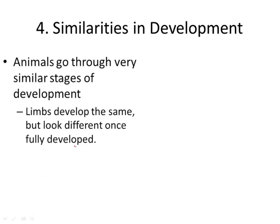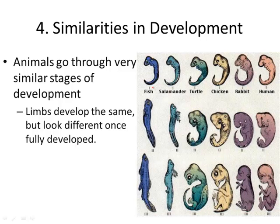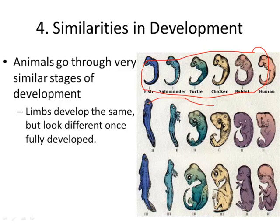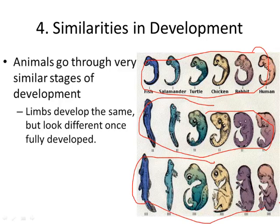We can also look at similarities in development. Looking at embryos of a fish, salamander, turtle, chicken, rabbit, and human, we can see they all look fairly similar early on. As they develop, they look quite different as adults, but they go through similar stages of development. This shows they have similar DNA and a common ancestor. A rabbit and a human are more similar to each other than a human and a fish, so they must be more closely related.